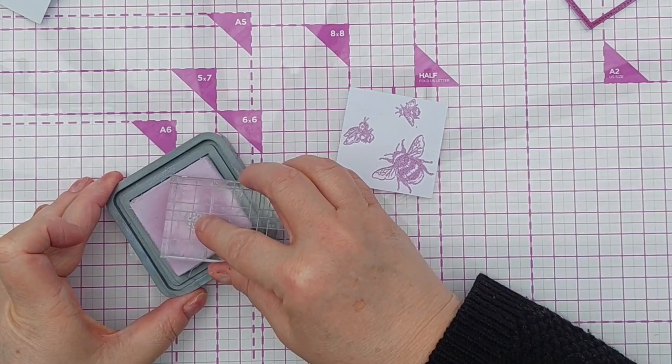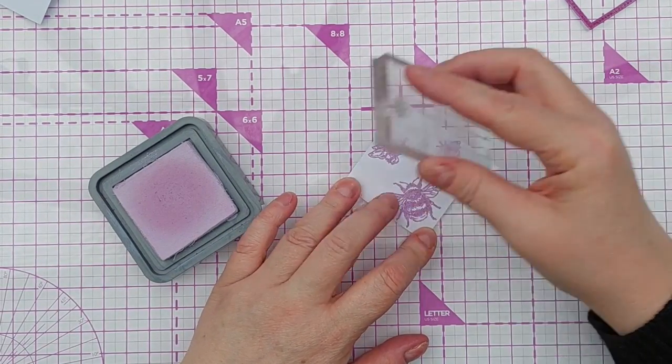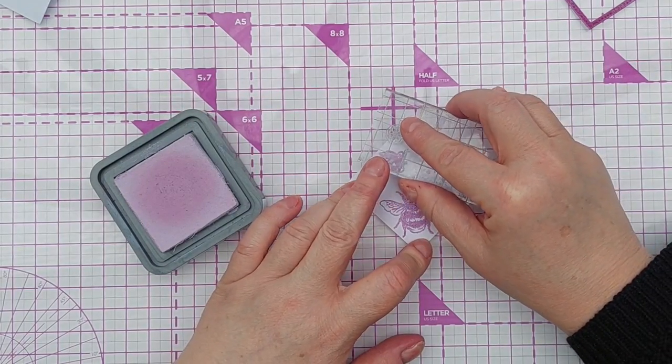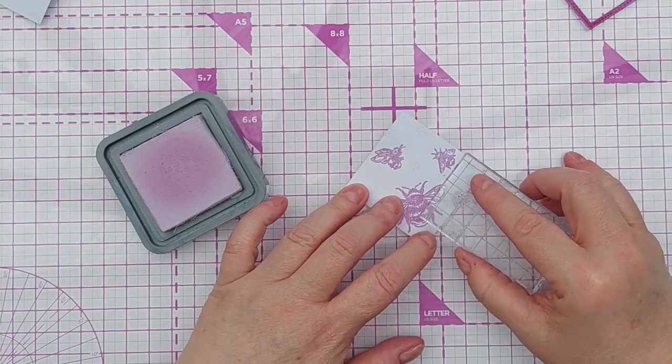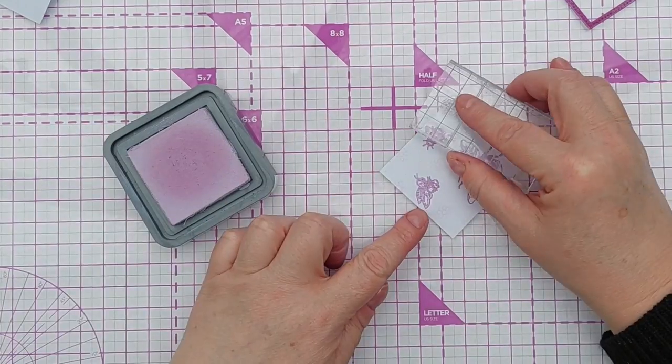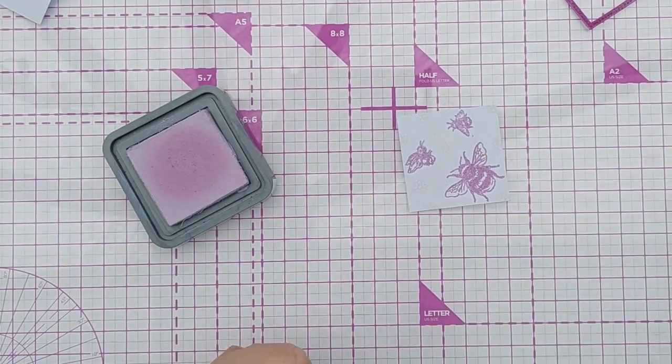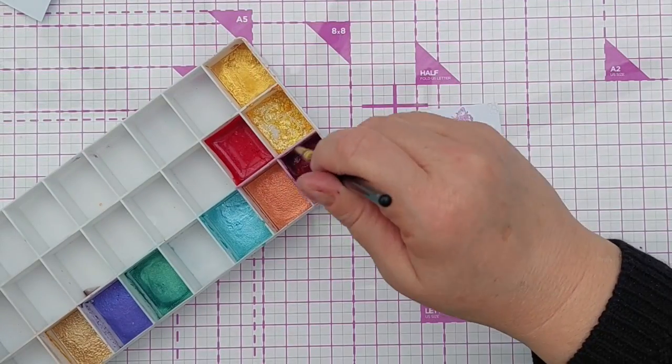I've got here a tiny little flower stamp and I'm going to stamp in milled lavender in and around the bees to carry on that bee botanical theme.